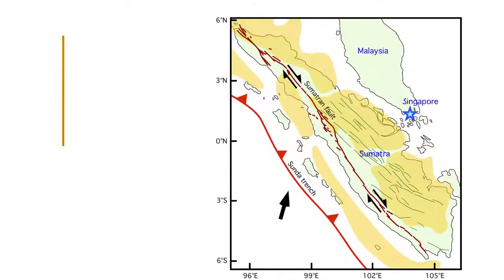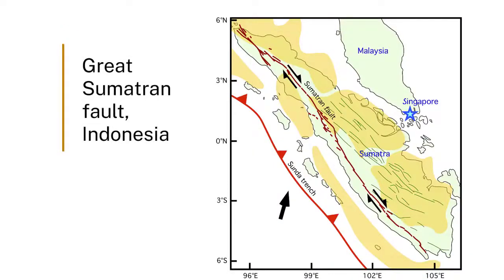All of the big earthquakes on Earth happen at convergent boundaries. There are other places where we get them — at divergent boundaries there are small earthquakes — but the big ones, like the San Andreas Fault, the fault in Indonesia that made the tsunami, and the Alpine Fault in New Zealand, are all at those sorts of places where we have convergent boundaries.